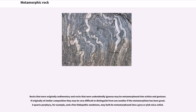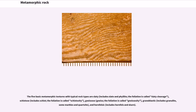Rocks that were originally sedimentary and rocks that were undoubtedly igneous may be metamorphosed into schists and gneisses. If originally of similar composition they may be very difficult to distinguish from one another if the metamorphism has been great. A quartz porphyry, for example, and a fine feldspathic sandstone may both be metamorphosed into a gray or pink mica-schist.